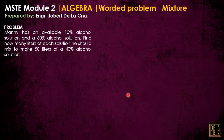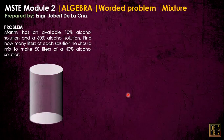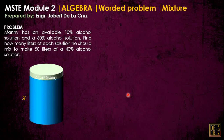Now let's move to mixture problems. Mani has an available 10% alcohol solution and a 60% alcohol solution. Find how many liters of each solution he should mix to make 50 liters of a 40% alcohol solution. The technique here: let's assume this is a barrel — or container for our liquids. Let's assume the volume X is the first barrel, so 10% of this volume X is alcohol, that is 0.1 of X.